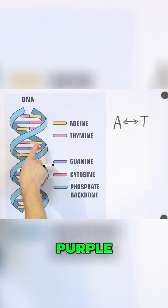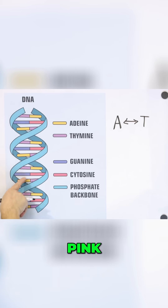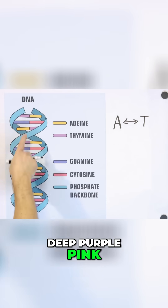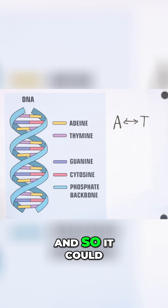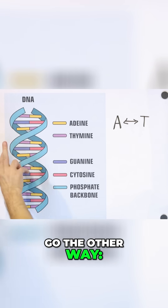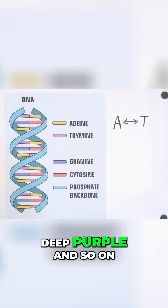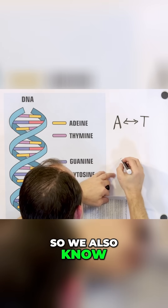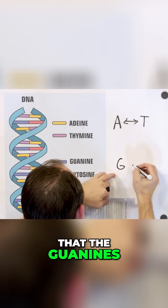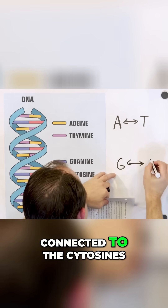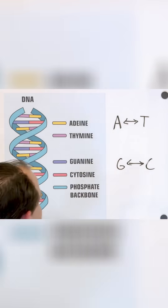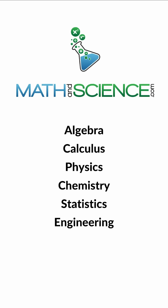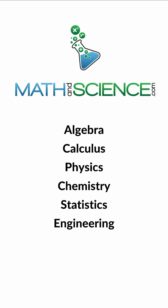And if you notice, everywhere you have a deep purple, it's always connected to pink — so guanine is always connected to cytosine. It could go either way — G pairs with C, C pairs with G. Learn anything at MathAndScience.com.